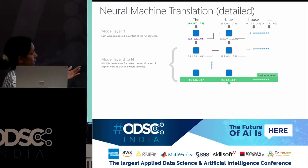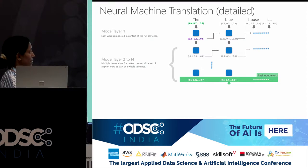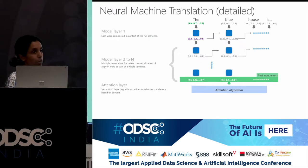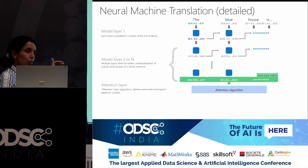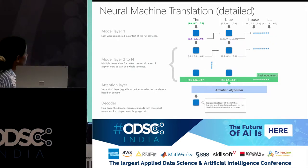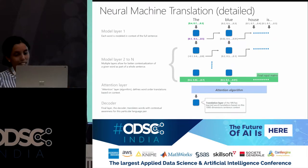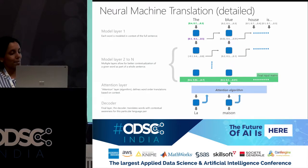This final input matrix gets into your decoder step. But if you simply have an encoder and decoder, what happens is that in very long sentences it is unable to find the context and forgets some information about the past. So nowadays, this attention algorithm is quite popular — an attention layer is put between the encoder and the decoder, and it has some sort of memory as to what happened in the past. This attention layer information, along with the final input matrix, gets into your decoder layer.